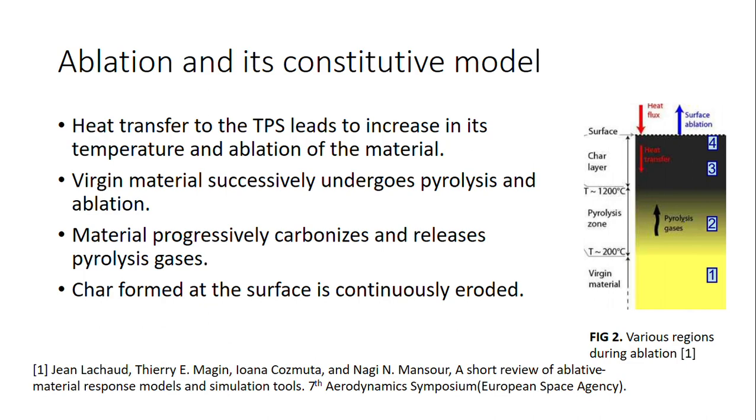The first region in direct contact with the heat flux is the char layer. This char is generated after complete pyrolysis of material has taken place. This layer continuously gets eroded after completion of pyrolysis, which leads to surface ablation or boundary recession. Then the next layer is the pyrolysis zone where virgin material is undergoing pyrolysis and getting converted to char. Various pyrolysis gases are also released. Then we have the third region which is virgin material.